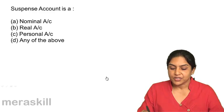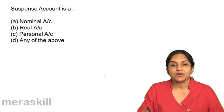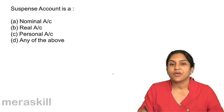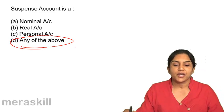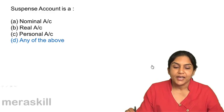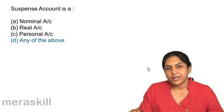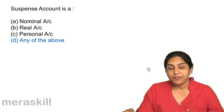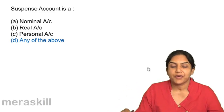Suspense account is: A, a nominal account; B, real; C, personal account; or D, any of the above. Suspense account is just a balancing account — an artificial, temporary account — so it could be any of the above. A suspense account, if it has a debit balance, would appear on the debit side of the balance sheet. If it has a credit balance, it goes to the credit side of the balance sheet, if there is a balance while preparing final accounts.